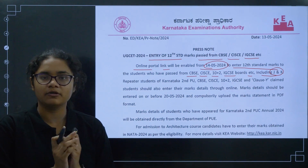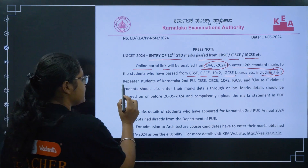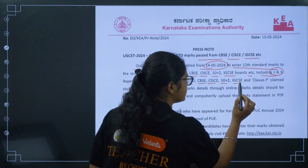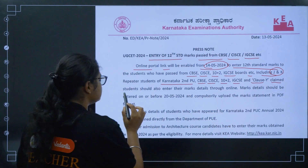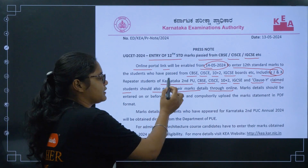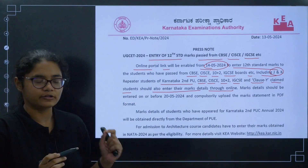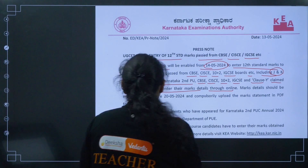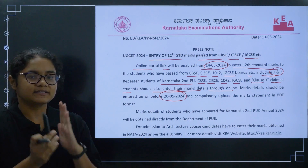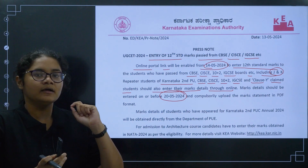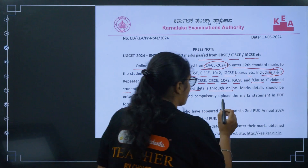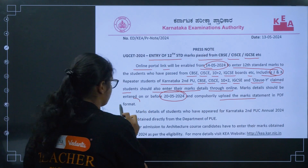The portal will open on 14th of May. Repeater students of Karnataka 2nd PU, CBSE, CISCE, 10+2 IGCSE, and clause Y claim students should also enter their mark details online. The mark details should be entered on or before 20th of May 2024, and the mark statement must be uploaded in PDF format.